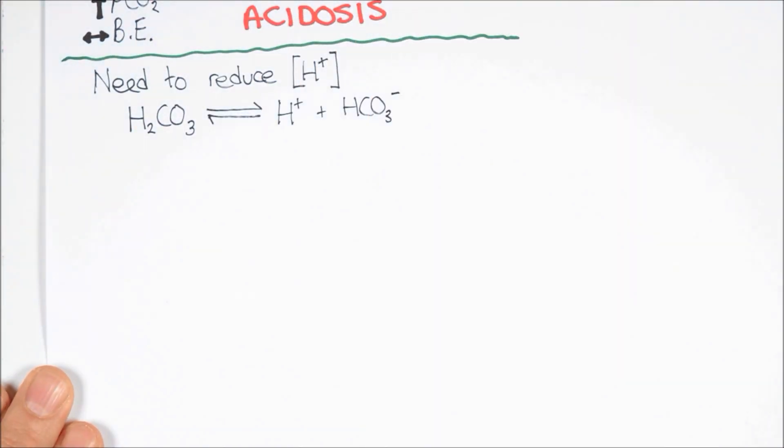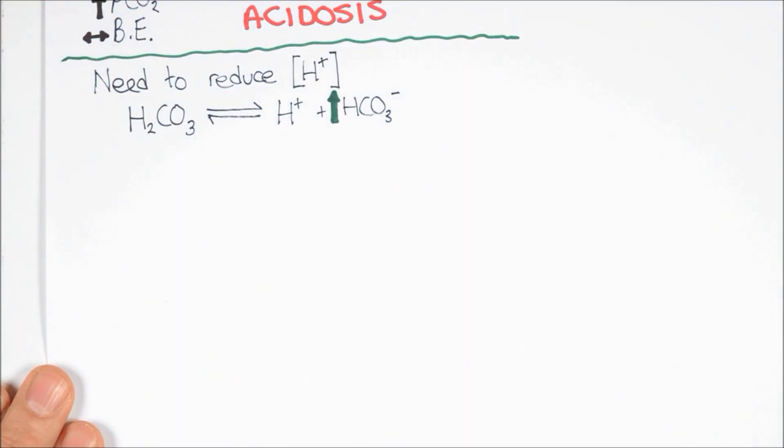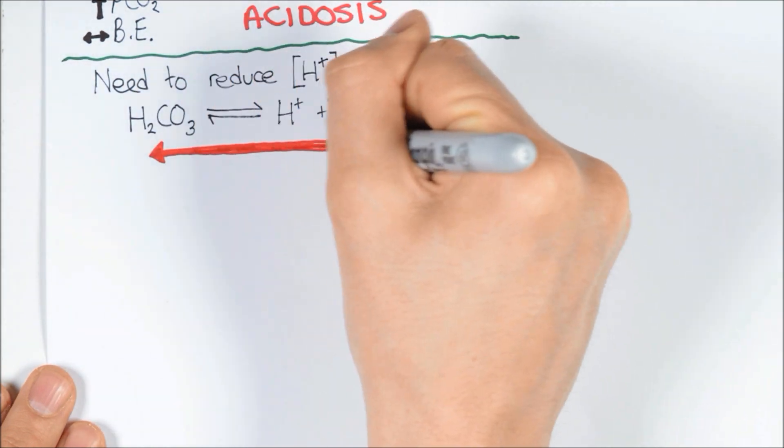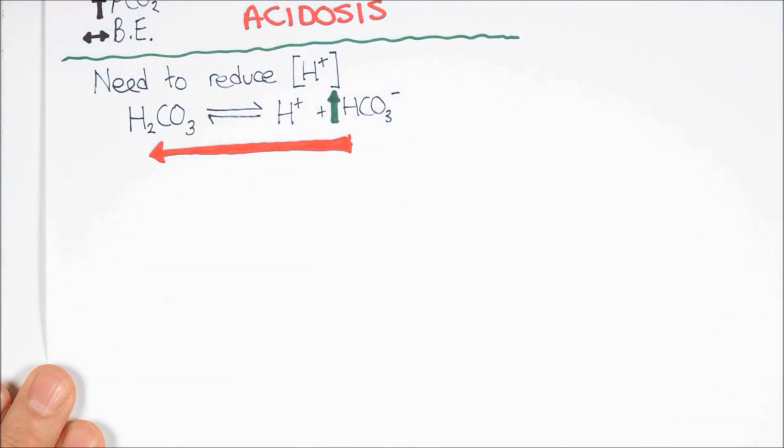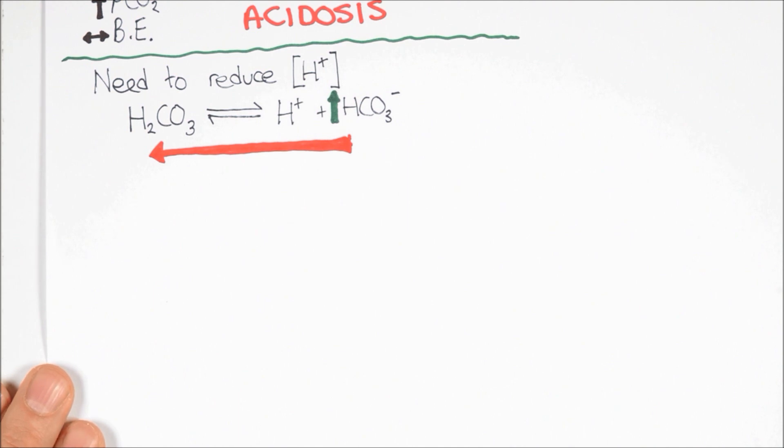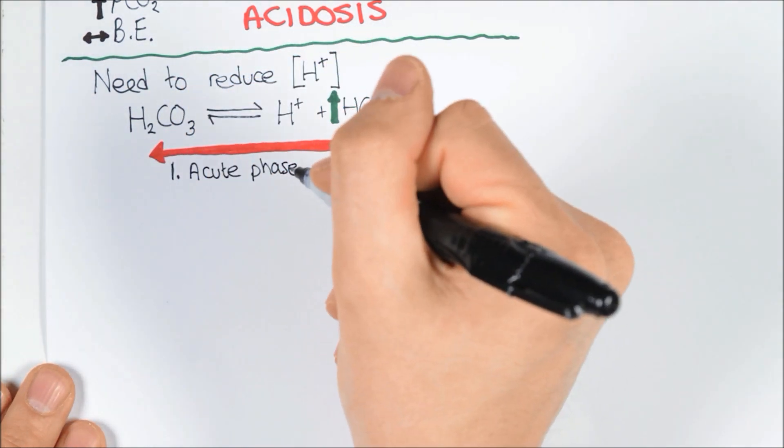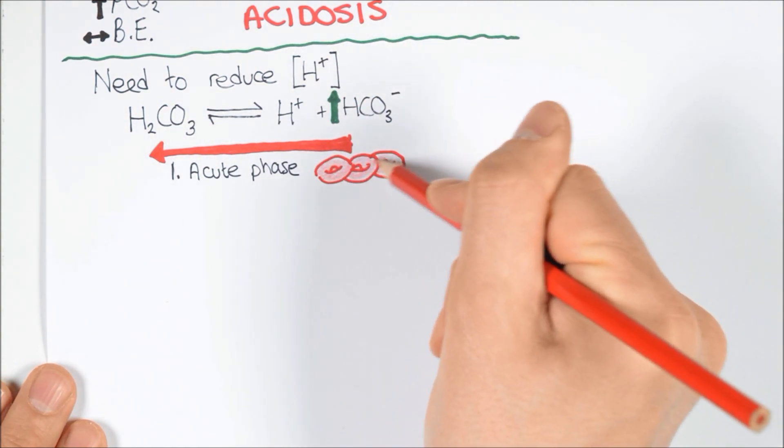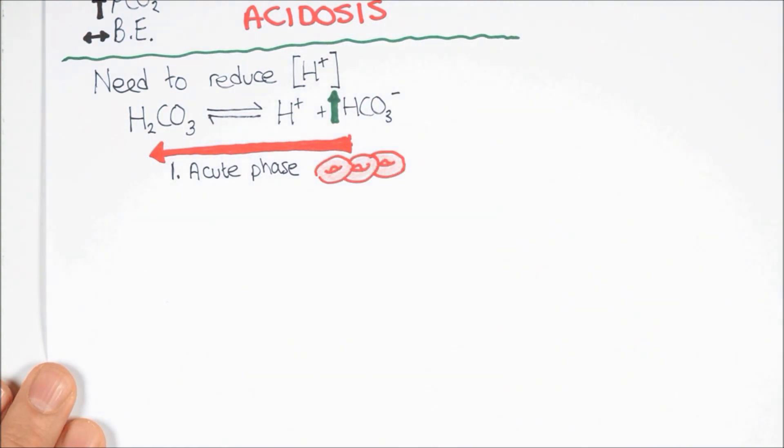To correct this imbalance, the body will try to reduce the proton concentration, and this is achieved by increasing the bicarbonate to bind some of the excess protons and normalize the pH. This happens in two phases, firstly an acute phase, where CO2 moving into the erythrocytes combines with water in the presence of carbonic anhydrase to form bicarbonate.